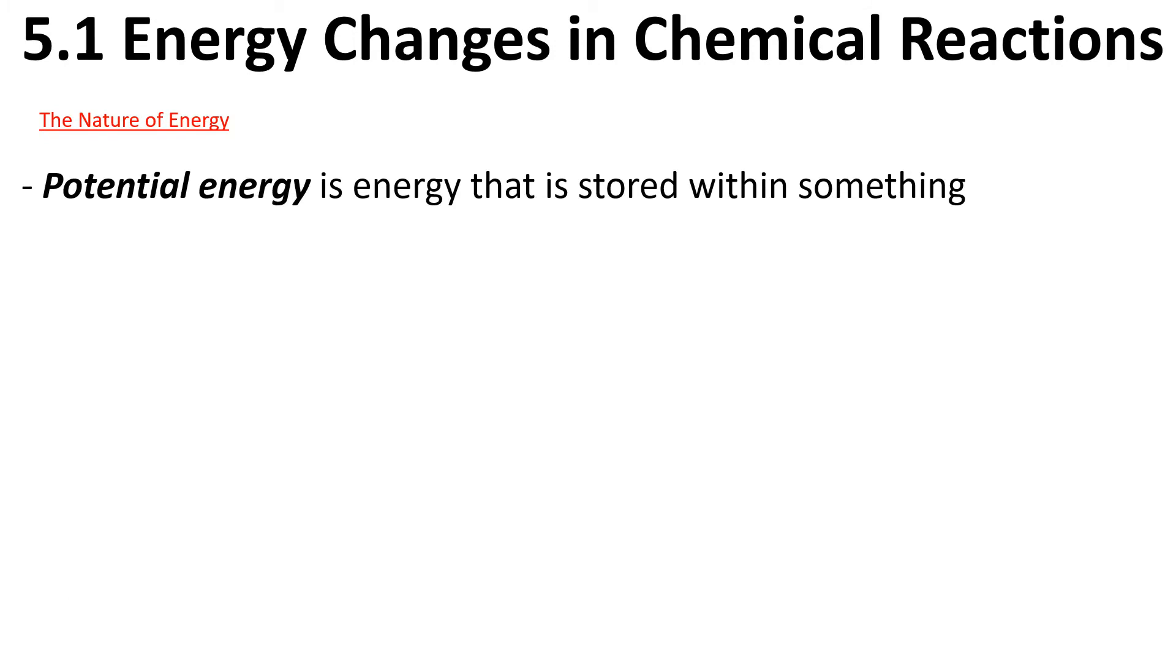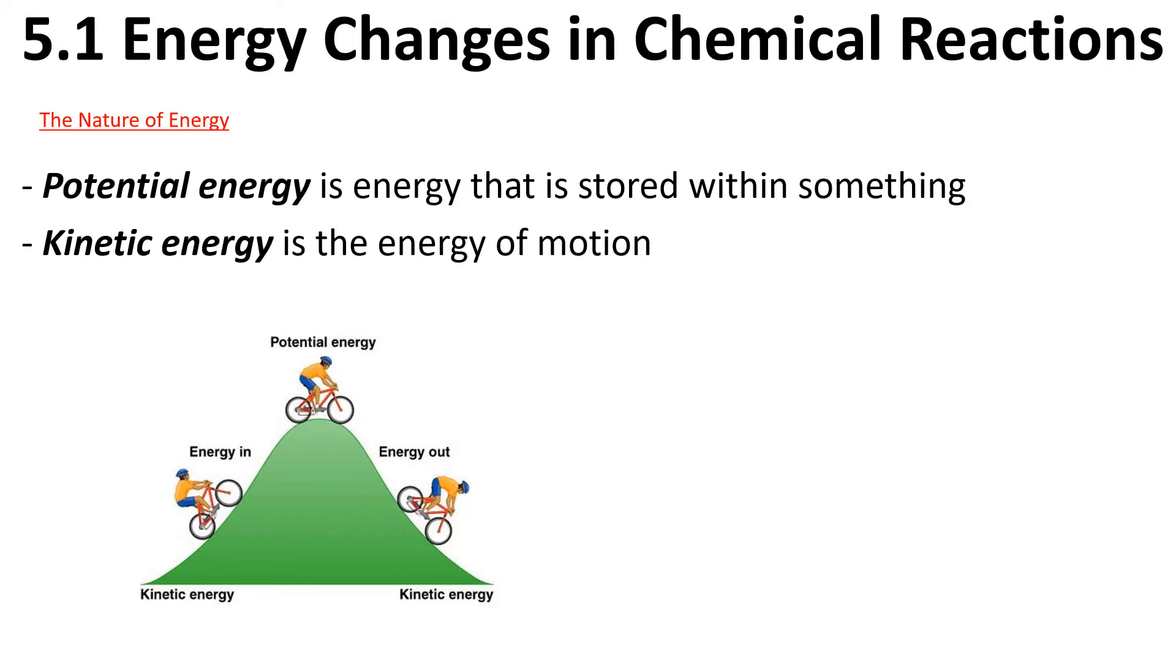We've got two kinds of energy to discuss: potential energy, which is the energy that's stored within something, and kinetic energy, which is the energy of motion. You can see in our picture, our cyclist is moving up a hill. He is in motion, so that is kinetic energy. When he gets to the very top and he's at a standstill, he has all potential energy because he's not in motion. As soon as he goes down the hill, the energy is being put back into kinetic, so it is changing between two forms.